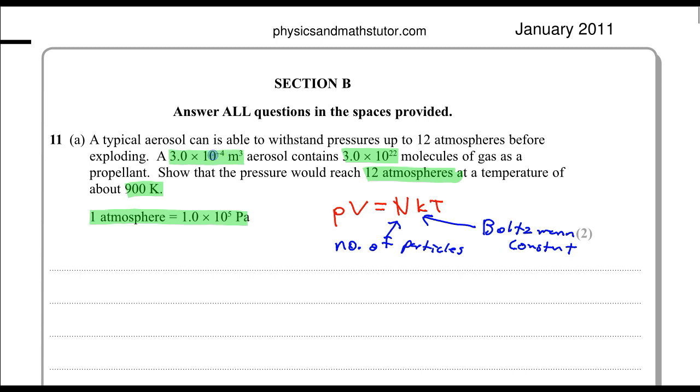So what we need to do is plug these numbers that we have into this equation and show that the temperature value comes around 900. We can make temperature the subject as the first step and say that if we divide both sides by NK, we will have PV over NK. The pressure is given as 12 atmospheres. We need to convert that to pascals because that's the base unit of pressure. So we times 12 by 1 times 10 to the 5.